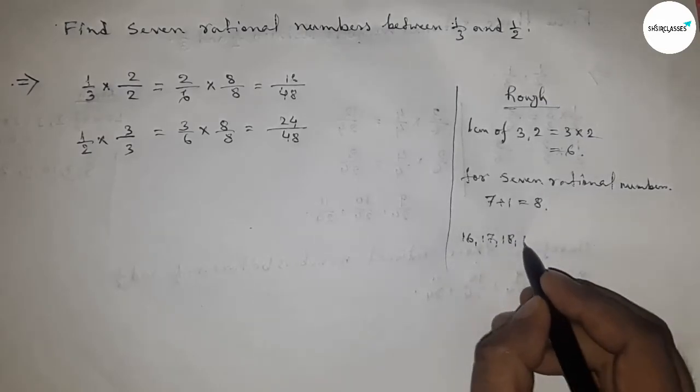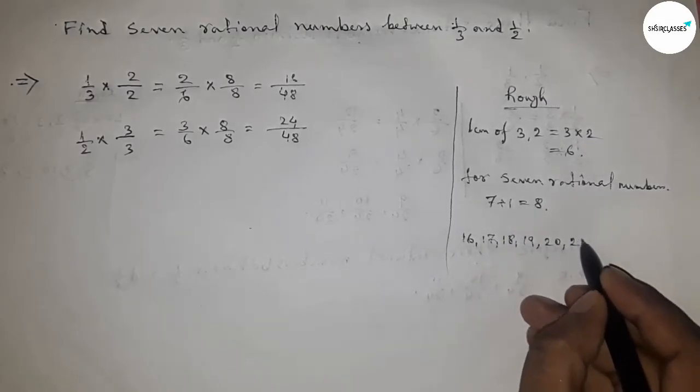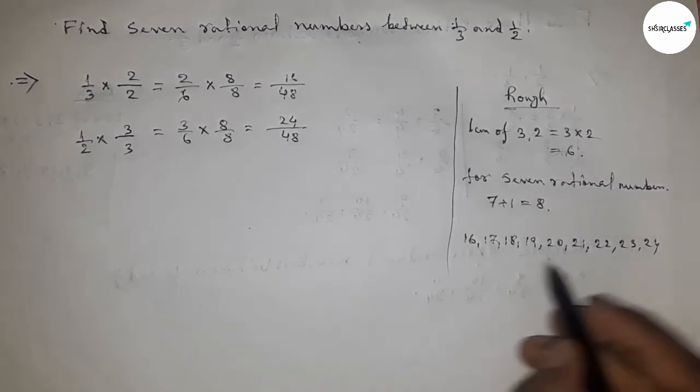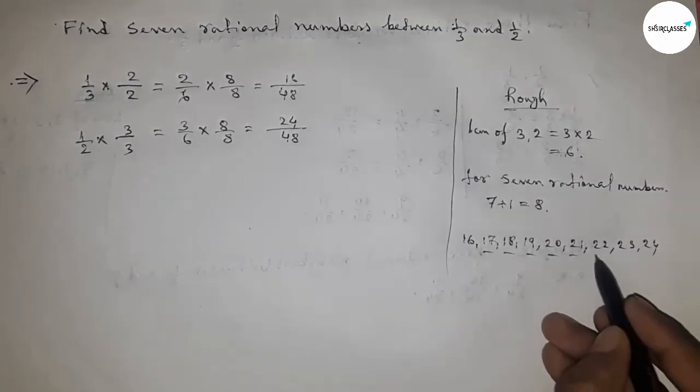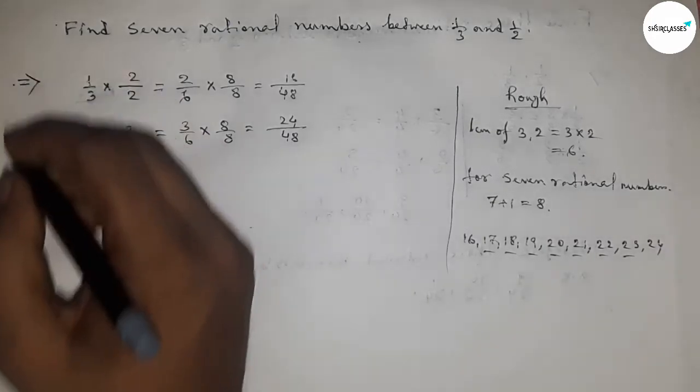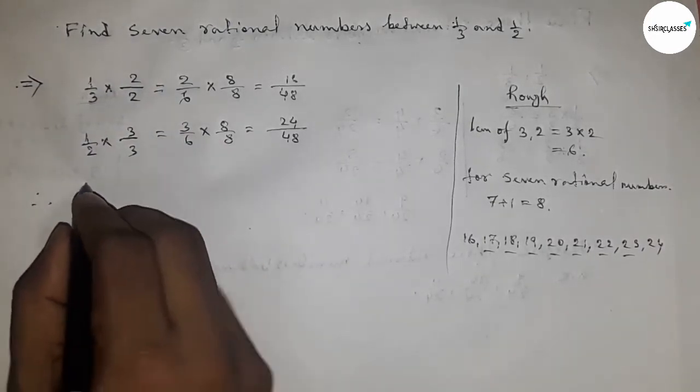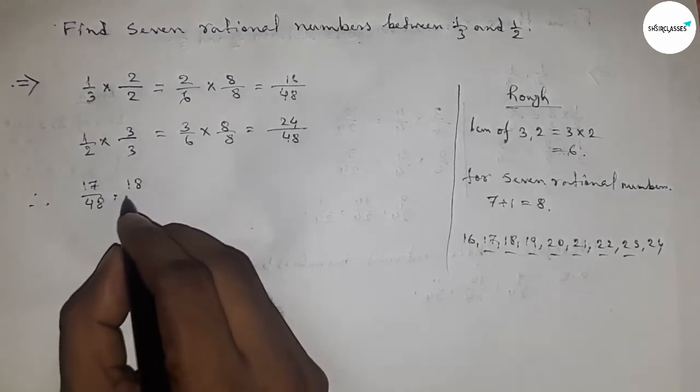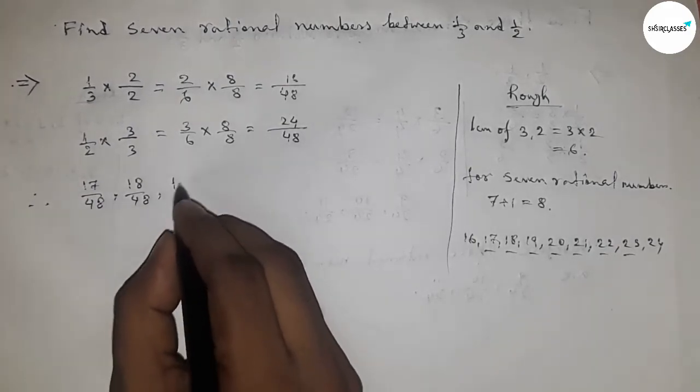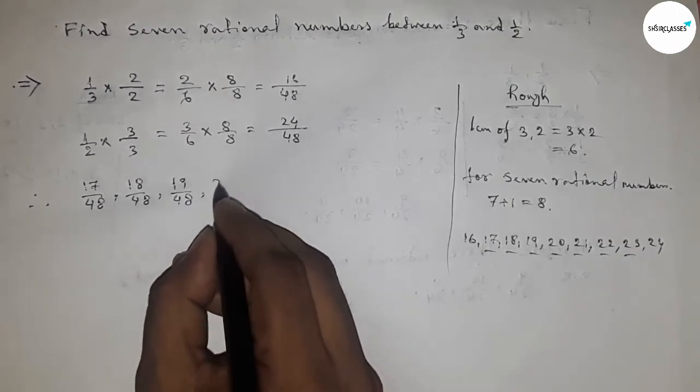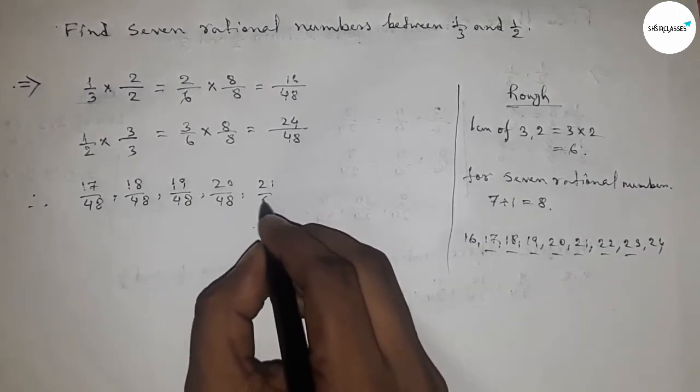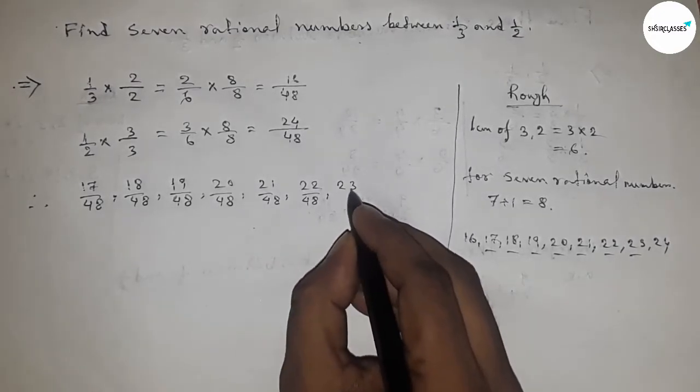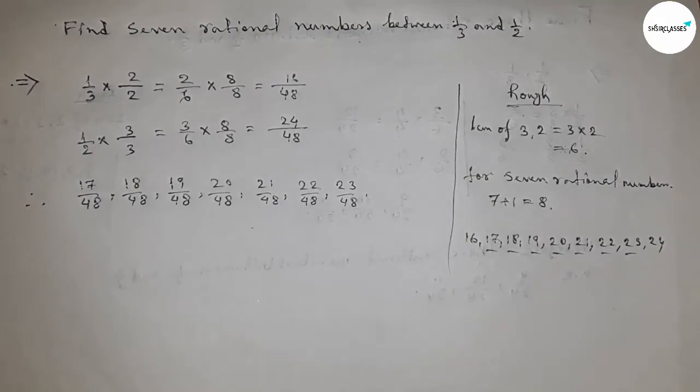So this is 16, 17, 18, 19, 20, 21, 22, 23, 24. We have these numbers to form the seven rational numbers. So first 17 by 48, 18 by 48, 19 by 48, 20 by 48, 21 by 48, 22 by 48, and 23 by 48. These are the seven rational numbers.